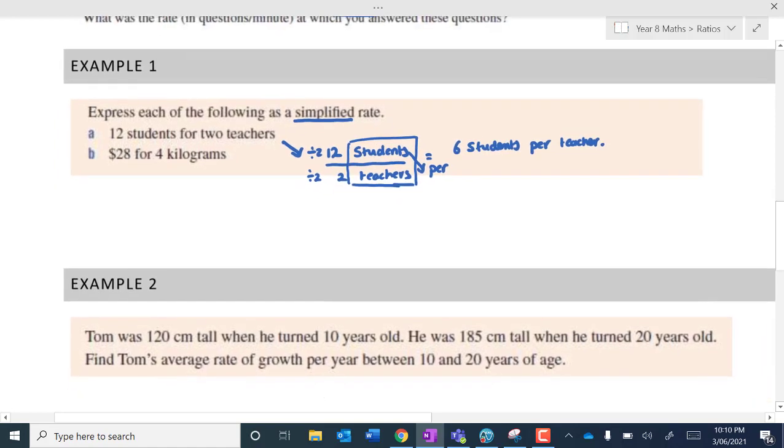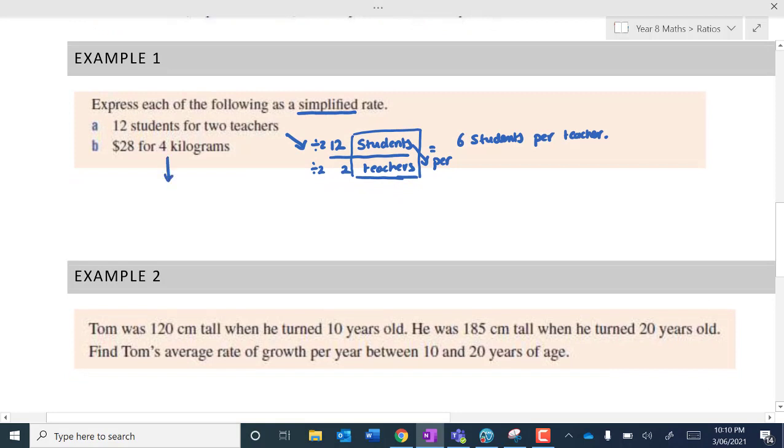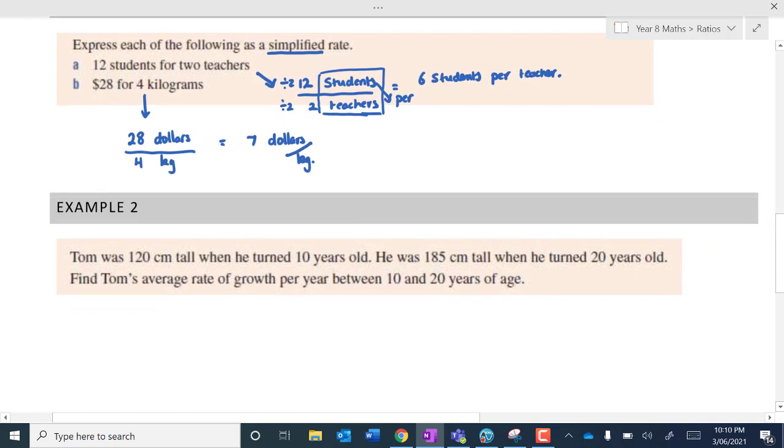Okay, kilometres per hour. $28 for four kilograms. So, of course, let's write it out. We've got $28, we've got four kilograms. So we can say four goes into 28 seven times. So that's going to be $7 per kilogram is our rate. Alright, so hopefully that's making sense.